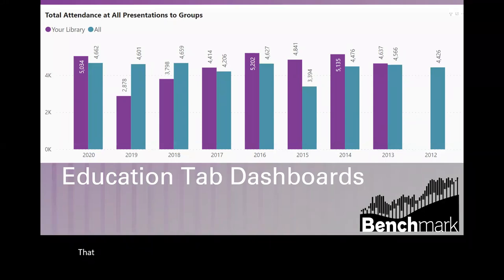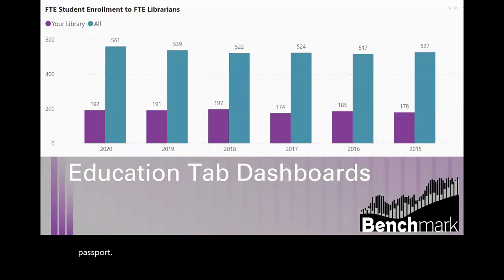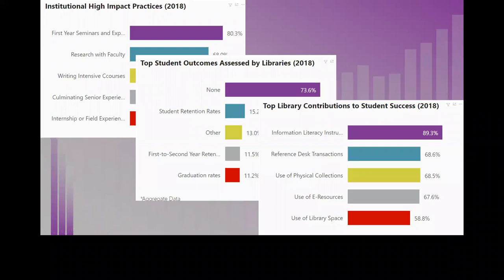Here's another dashboard showing the calculated ratios — a very popular one that looks at student enrollment to FTE librarians. And finally, to give you a flavor, some of the dashboards are based on the 2018 trends survey on library contributions to student success. That particular survey had questions on top library contributions to student success, top student outcomes assessed by libraries, and institutional high-impact practices as defined by the National Survey of Student Engagement.